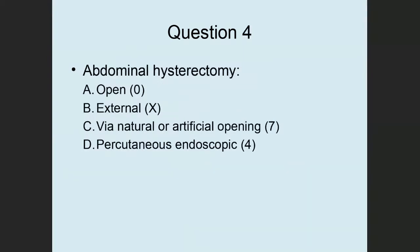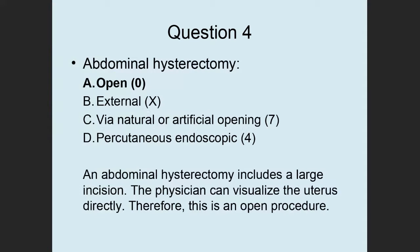Question 4: Abdominal hysterectomy — is the approach open, external, via natural or artificial opening, or percutaneous endoscopic? This is open. An abdominal hysterectomy, by definition, includes a large incision and the uterus is removed through that incision. The physician directly visualizes the uterus as the procedure is performed, therefore it is open.